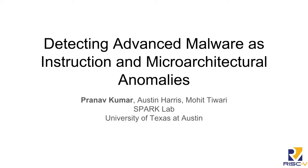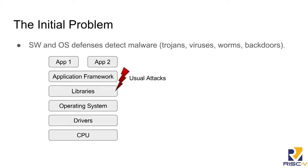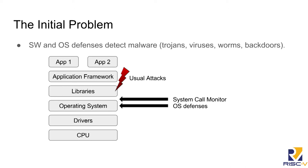My name is Pranav, and my project is on detecting advanced malware — those that evade all software defenses — as instruction and microarchitectural anomalies, modeling it as a computational anomaly. Software and OS defenses detect routine off-the-shelf malware like trojans, viruses, worms, and backdoors with good accuracy, as long as we have some kind of defense in the software stack below the attack.